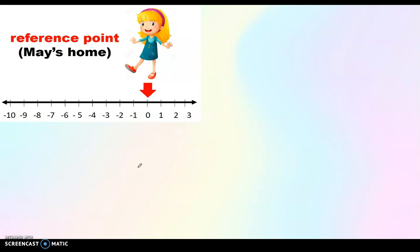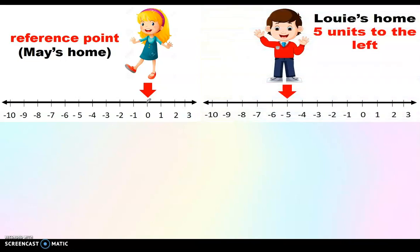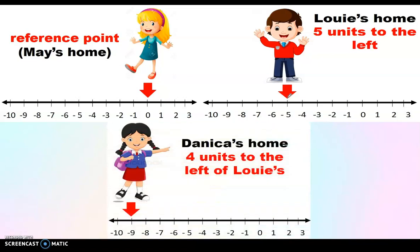Here's the reference point. This is May's house at zero. When you say west, that represents negative or going to the left. That means five blocks west is the house of Louie — five units to the left, this is Louie's house. And from Louie's house, May will go to Danica's house, which is four blocks to the west. Here is the number line for Danica's house.